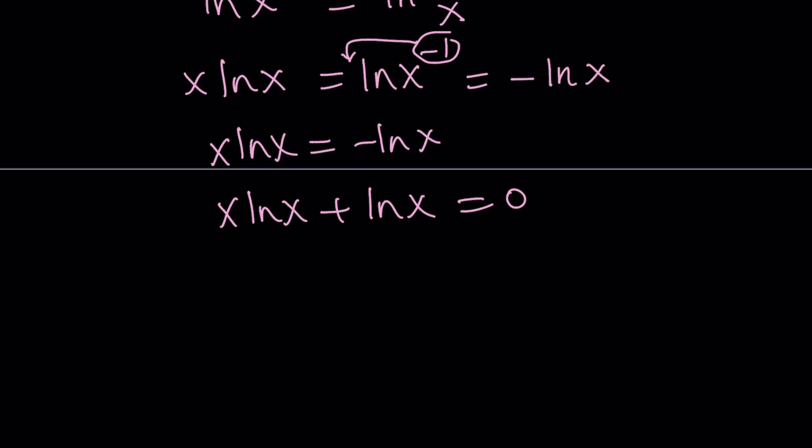And to make matters better, not worse, we have a common factor. So we can take out an ln x here and then write this as ln x times x plus 1 equals 0. And this is nice. Why? Because you have two factors and each of them can be 0.